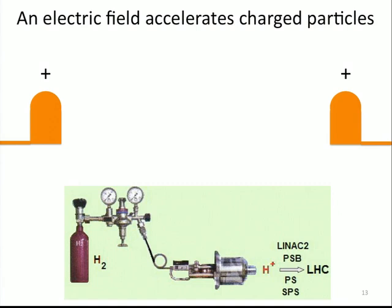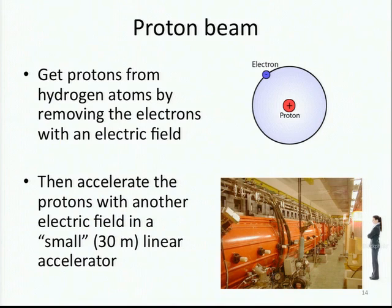How do we obtain our proton beam? We start with a small bottle of compressed hydrogen gas. The gas goes through an apparatus where we apply a potential difference and extract our protons - just ionized hydrogen atoms - and throw away the electrons. That goes into the LINAC, a small accelerator you see here. We get protons from hydrogen atoms by removing electrons with an electric field, then accelerate them with another electric field inside the linear accelerator. It's about 30 meters long.